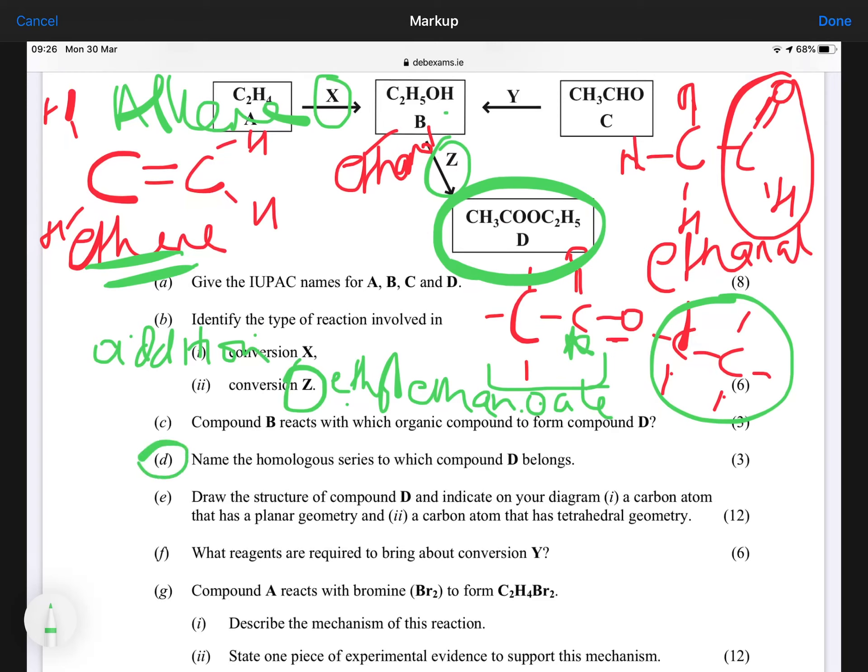And then it says, on your structure, so you've already drawn out D, indicate a carbon that has planar. Well, I've already asterisked it there. The carbon that's planar is the one with the C double bond O. So that's your planar carbon. And then any carbon that's tetrahedral, well, they're both tetrahedral carbons. That would be a tetrahedral carbon as well, because of the four single bonds coming out of it.